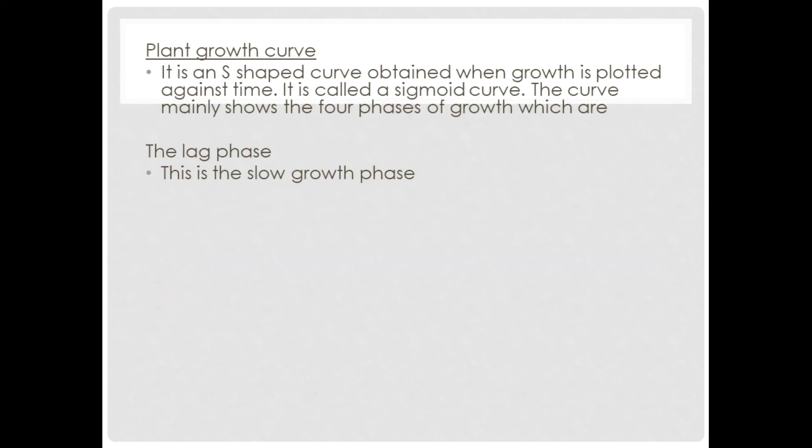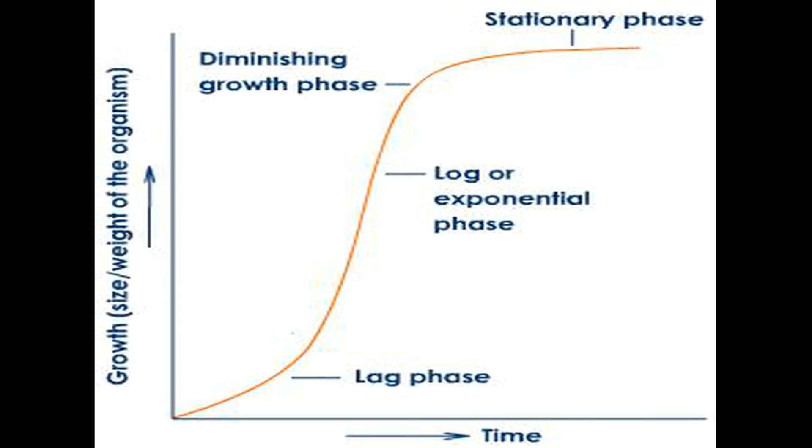Now let's take a look at the plant growth curve. A plant growth curve is an S-shaped curve obtained when growth is plotted against time. It is also called a sigmoid curve. The curve mainly shows the four phases of growth, which are, first of all, the lag phase. This is when growth is very slow.